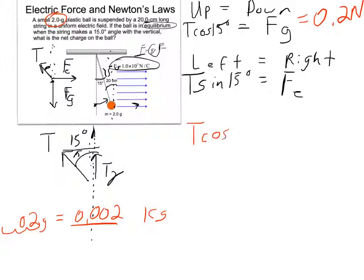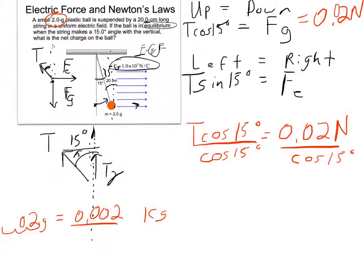So my force of gravity is 0.02 newtons. Well, now I can just solve this equation for T cosine 15. So if I rewrite it, T cosine 15 degrees equals 0.02 newtons divided by cosine 15.